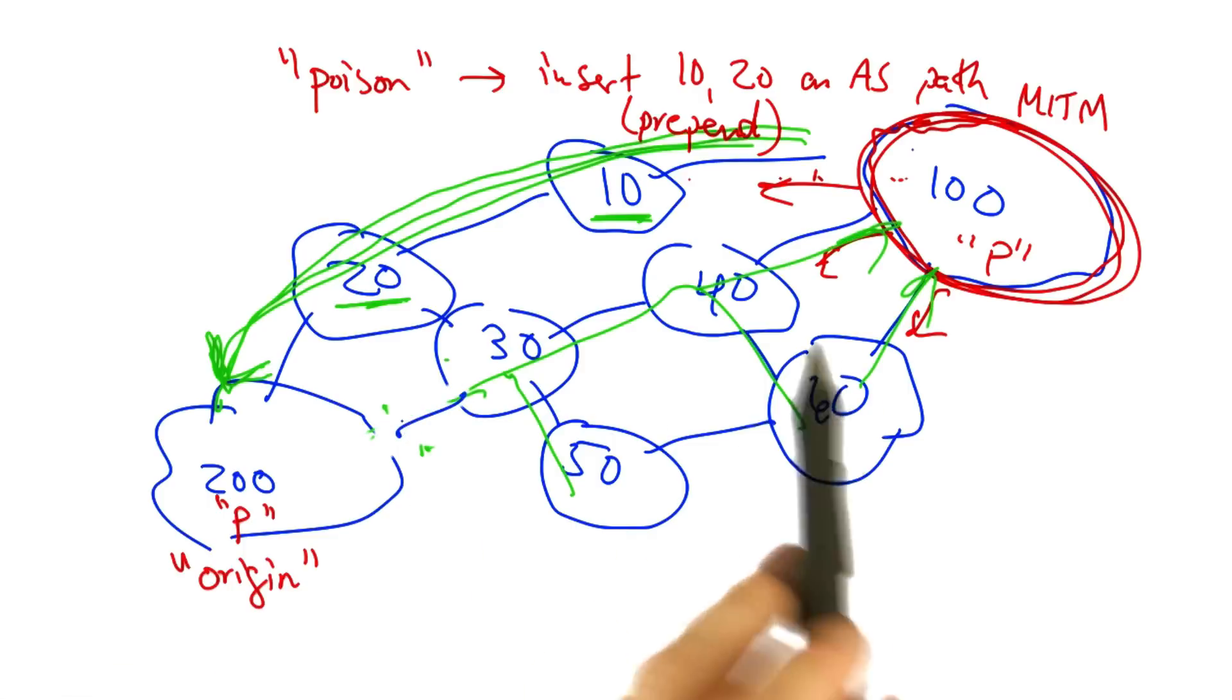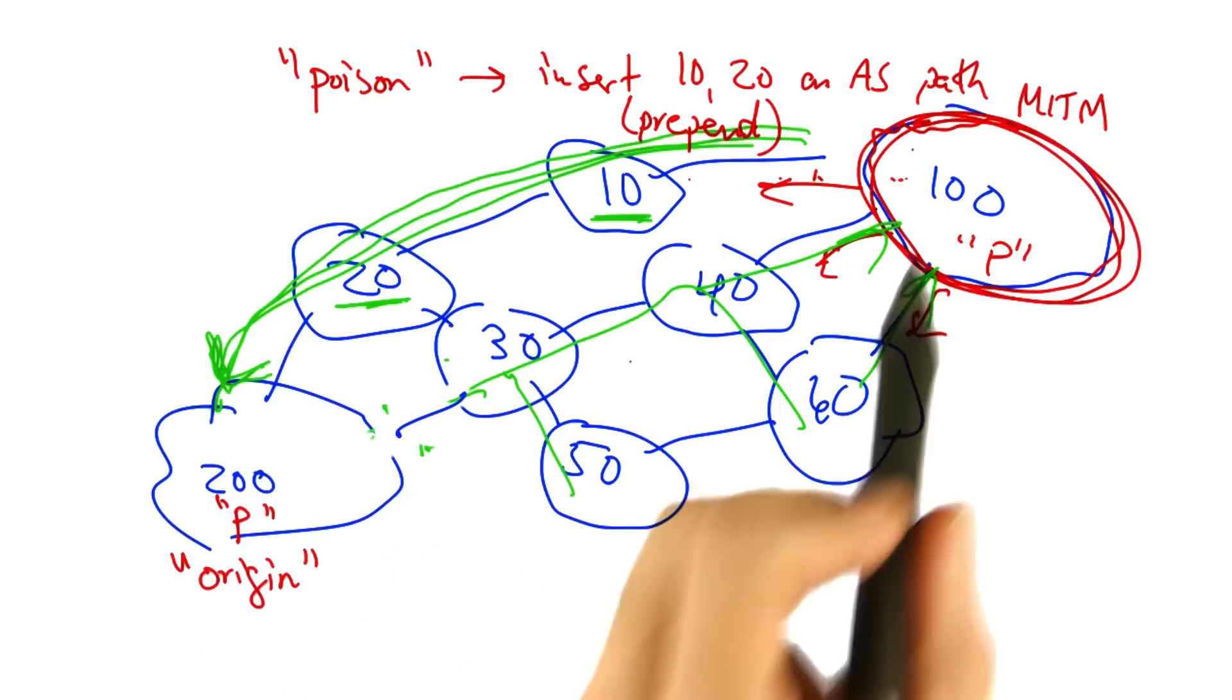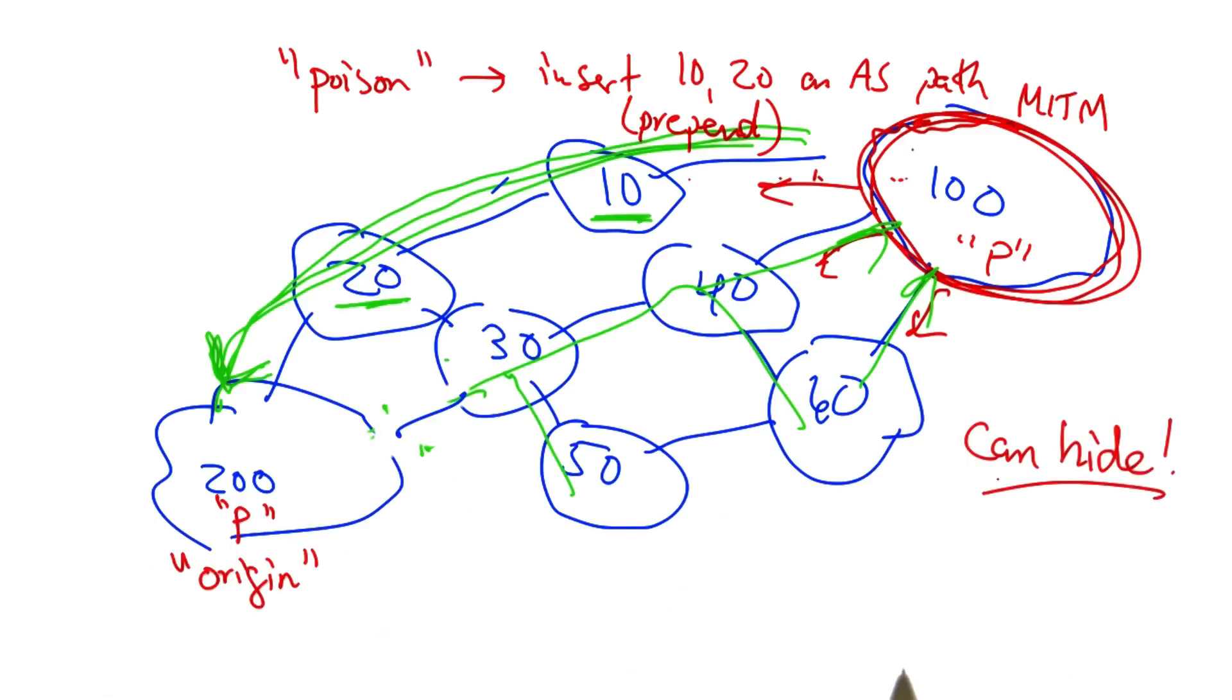And now all of the traffic from other ASs en route to AS200 will traverse the attacker AS100. Now a traceroute might look awfully funny taking this circuitous route, but actually the attacker can hide its presence even if the sender is running a traceroute.